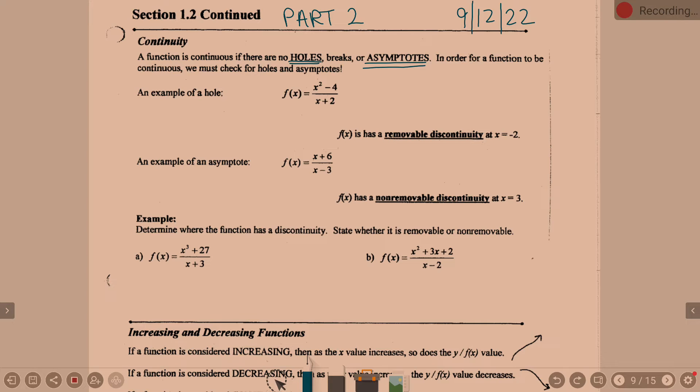But our first thing that we're going to think about when we're talking about holes and asymptotes is we always want to factor our equation. We always want to factor because we want to check and see what is happening here. So if we factor this, what do you know about x squared minus 4?